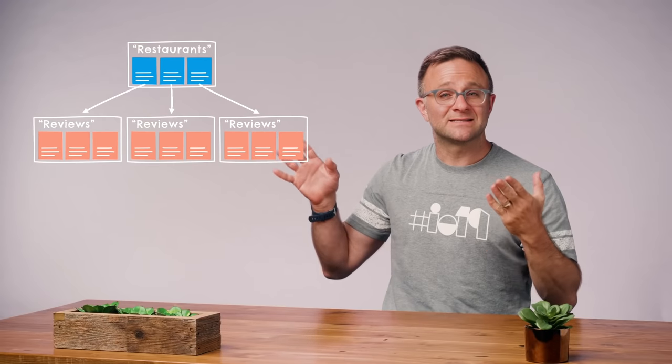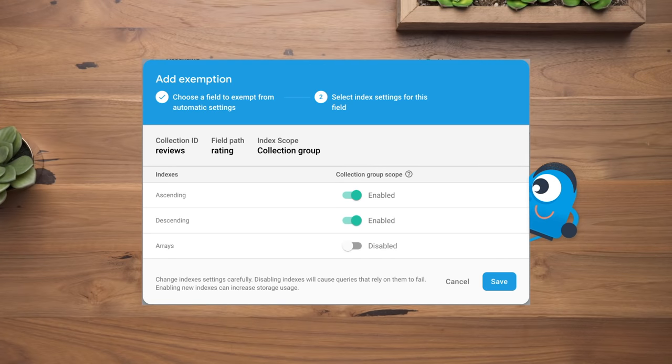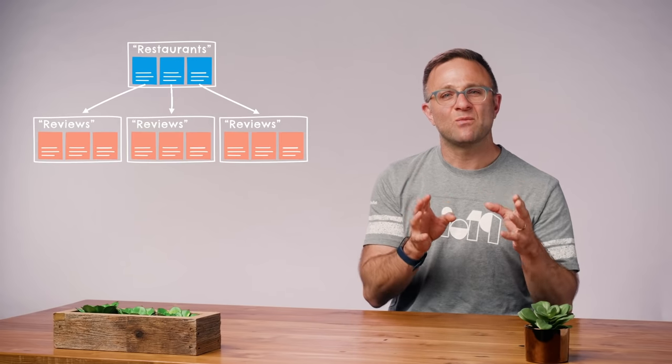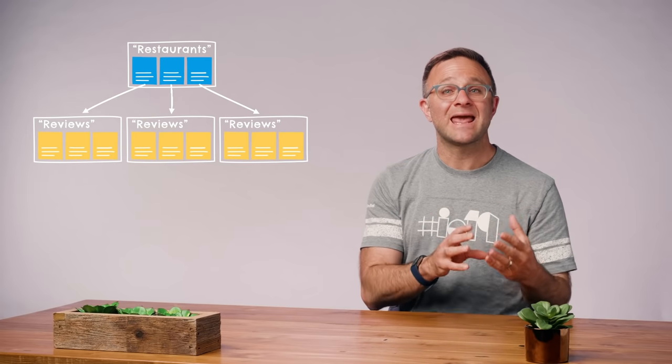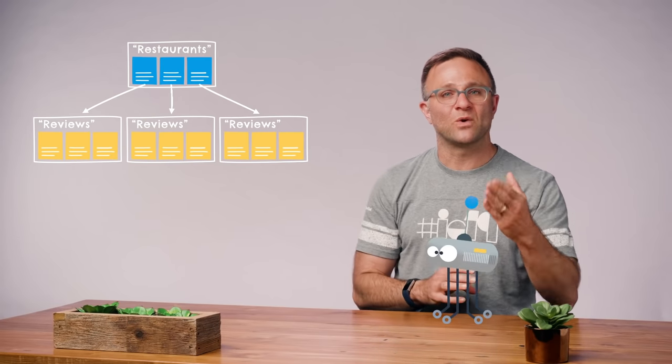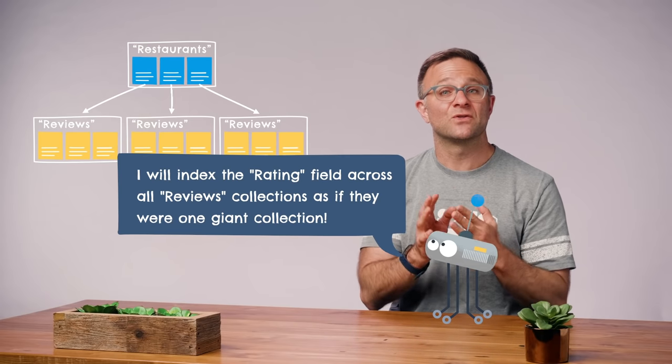Todd from 2019 here with an important update. This kind of query that spans multiple collections is called a collection group query, and it's something that Cloud Firestore now supports. To enable a collection group query, you go to the Firebase console and tell Cloud Firestore exactly which field you want to search for across a given collection name. For example, to find all four-star restaurant reviews, you would declare that for the collection called reviews, enable the field named rating with a collection group scope. This basically tells Cloud Firestore to index the rating field of every document in any collection called reviews as if it were one giant collection, and then you can search for those reviews by rating.